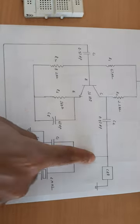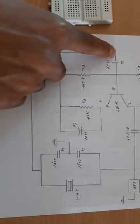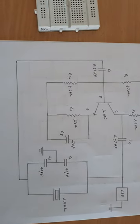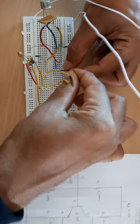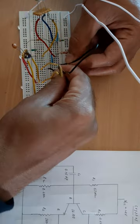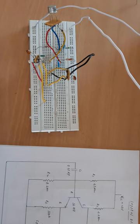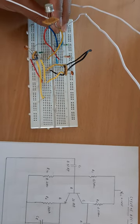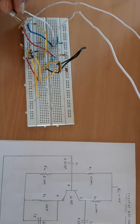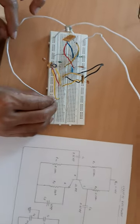One end of the 22 picofarad capacitor should be connected to 0.47 microfarad C1, and similarly the other end should be connected as feedback to C1. This one is C1, and this one is one side of the 22 picofarad. I am taking a connecting wire — one end connected to C1, and the other connected to the other 22 picofarad capacitor.